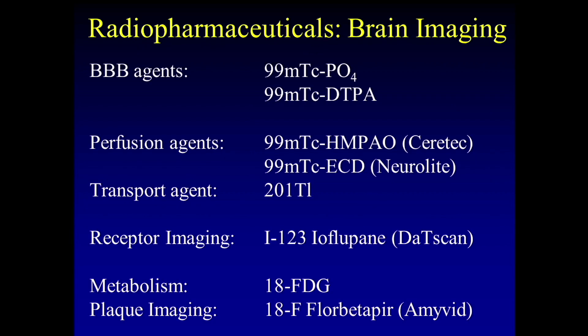These are the agents that can be used for brain imaging. In the old days, we used to use blood-brain barrier agents — technetium pertechnetate and DTPA — and that was before CT was available. So we were just looking at contrast leakage or enhancement on the scan.